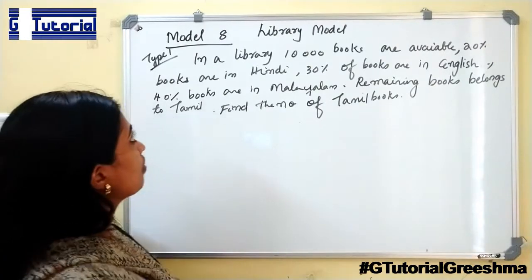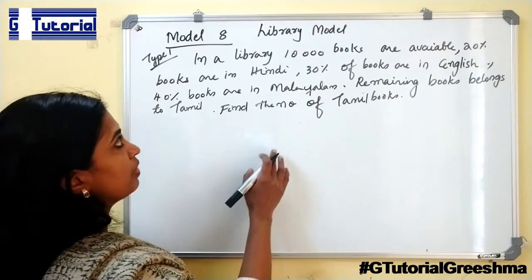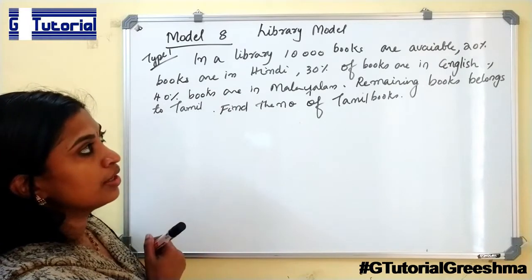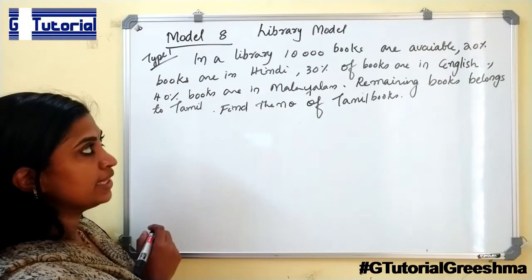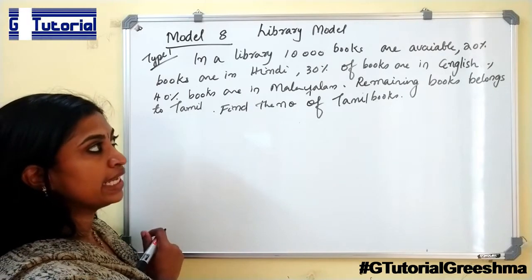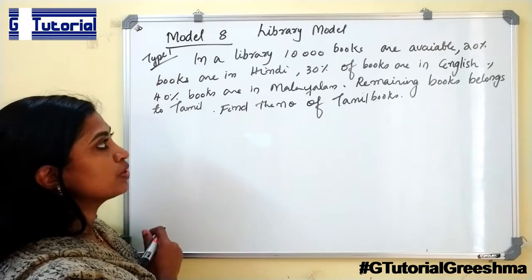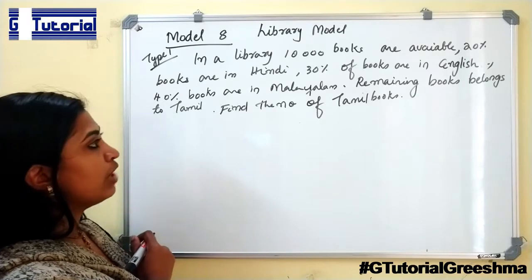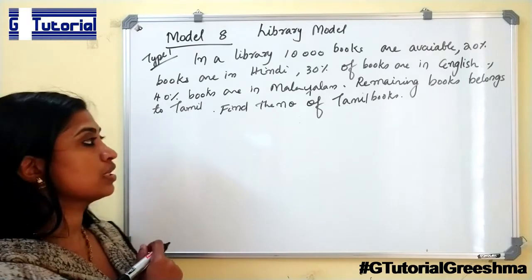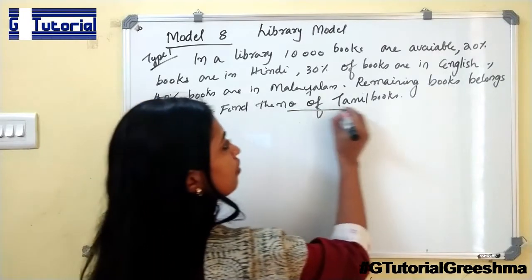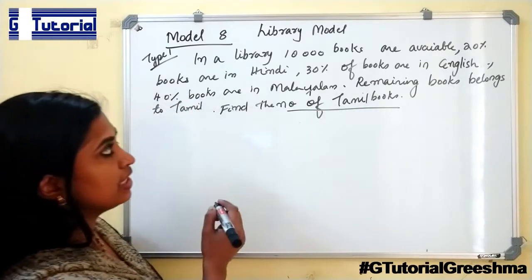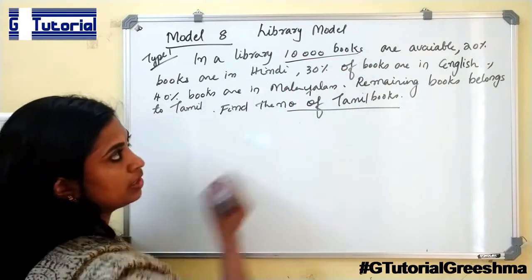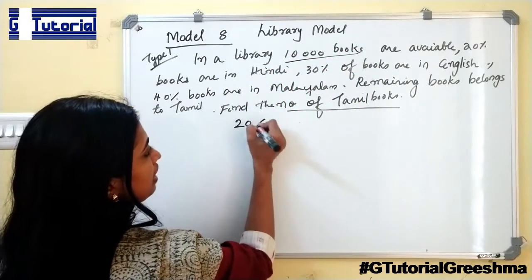Next model is the library model. Type 1 problem: In a library, there are 10,000 books. 20% books are in Hindi, 30% books are in English, 40% of the books are in Malayalam, and the remaining books belong to Tamil. Find the number of Tamil books. We are asked to find the number of Tamil books.